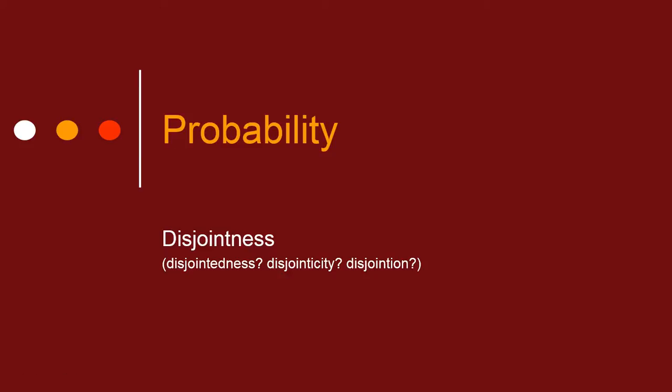Let's talk about disjointness. We're going to talk about disjoint and non-disjoint outcomes. We've talked about an event - an event is a process, usually a random process, that can produce more than one possible outcome.